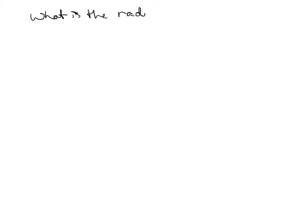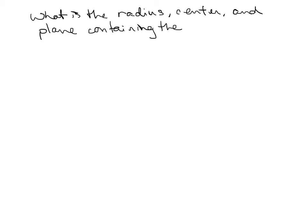Let me give you a vector-valued function and figure out some information about it. The question is: what is the radius, center, and the plane containing the circle? I'm going to write this in vector form. Here's notation you may not have seen before — r of t. A lot of times r is used for vector-valued functions.